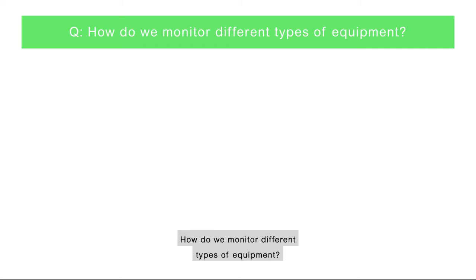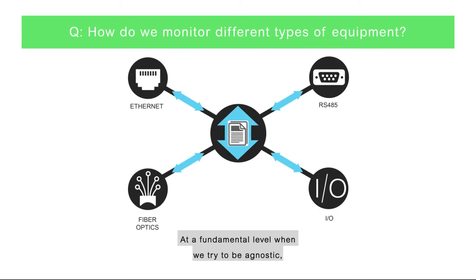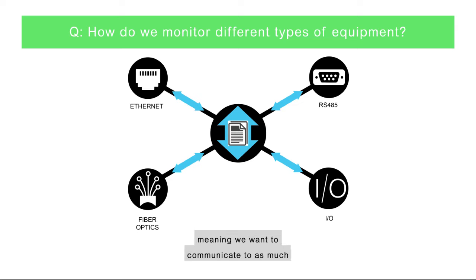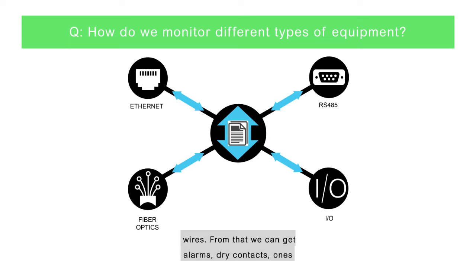How do we monitor different types of equipment? At a fundamental level, when we try to be agnostic — meaning we want to communicate to as much equipment as possible, regardless of who makes it — we have to deal with either discrete inputs or hard wires.